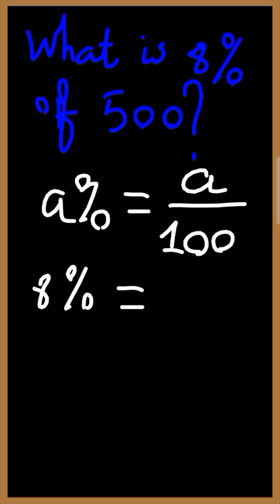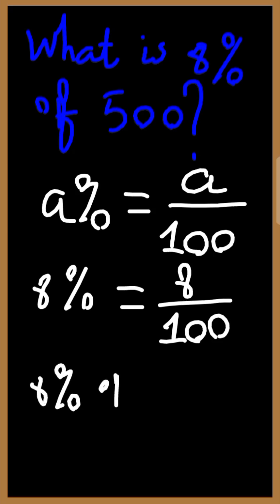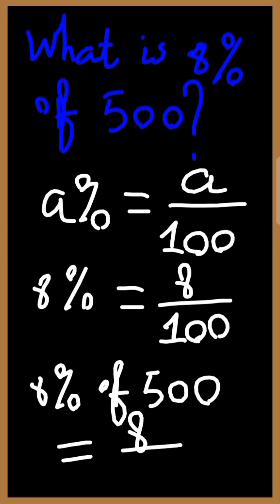If we take 8%, by applying the above formula, it is simply equal to 8 all over 100. Calculating 8% of 500, this will simply be equal to—we know 8% is simply 8 all over 100.